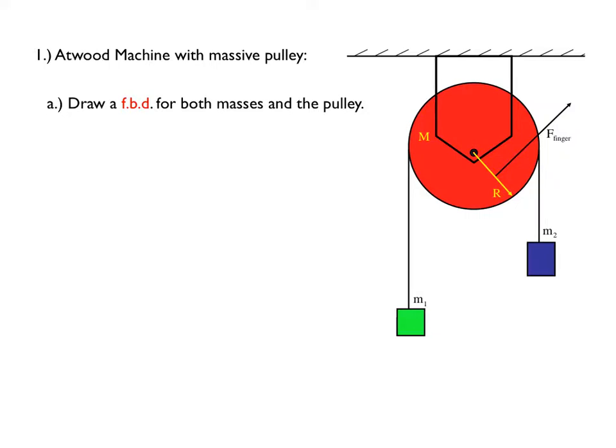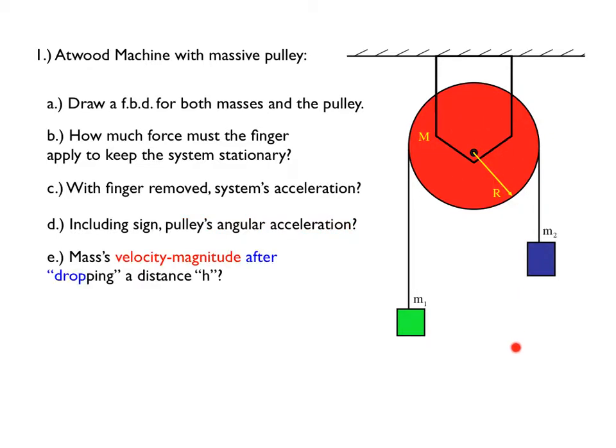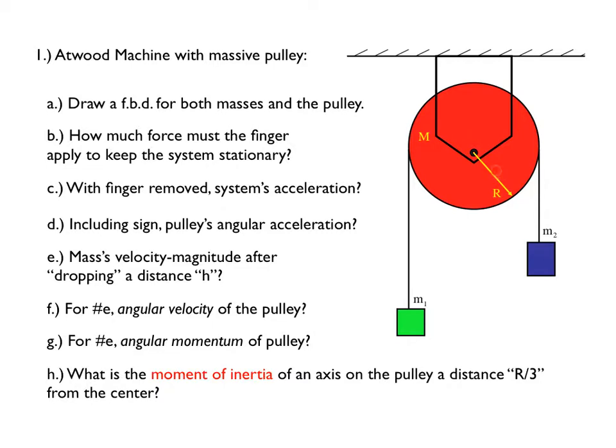First possibility is an Atwood machine. Mass, mass, massive pulley. Finger holding the pulley in place. Draw a free body diagram. Determine how large the force the finger has to apply to keep the system in static equilibrium. It's a rigid body problem. Remove the finger and let the system accelerate. Determine the acceleration of either M1 or M2. Knowing the acceleration of M1 or M2, determine the angular acceleration of the pulley. Let M2 drop some distance with M1 rising an equal amount. Determine what the velocity of M2 is after the drop. Knowing what M2's velocity is after the drop, determine the pulley's angular velocity at that point. Determine the pulley's angular momentum at that point. And for a picked point on the pulley, determine its moment of inertia, given that you know what the moment of inertia is about the axis of rotation.